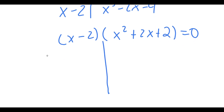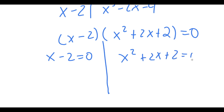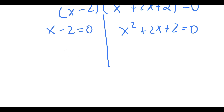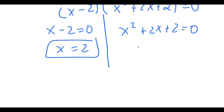So now this gives me two equations: I have x minus 2 is equal to 0, and I have x² plus 2x plus 2 is equal to 0. For x minus 2 equals 0, x is obviously equal to 2.